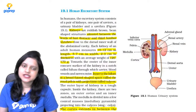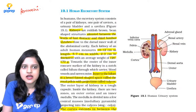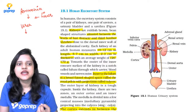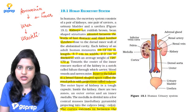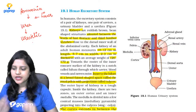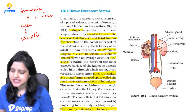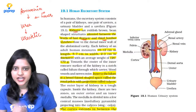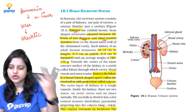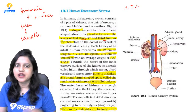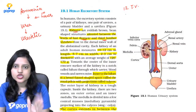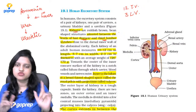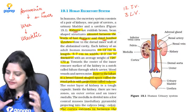Ammonia is converted into urea in the liver — that's why we are ureotelic. Coming to the human excretory system, we have kidneys. Kidneys are situated between the last thoracic and third lumbar vertebra. We have 12 thoracic vertebrae, so from the 12th thoracic vertebra up to the third lumbar vertebra is where our kidneys are present. Lumbar vertebrae are 5 in number.